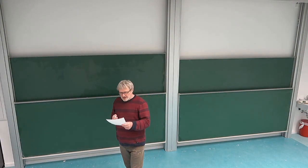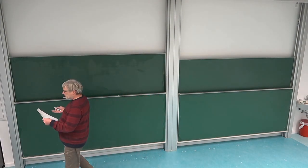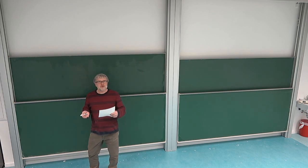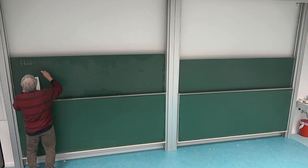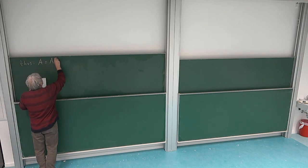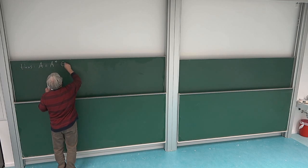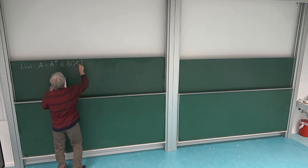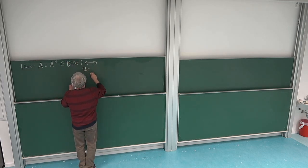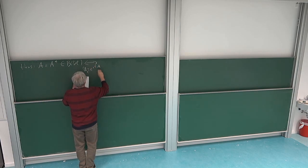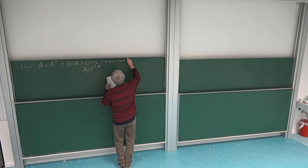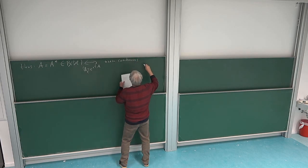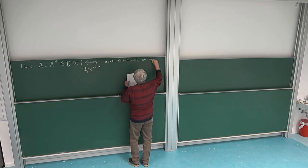What we have seen up to now is that norm-continuous groups correspond to bounded self-adjoint operators. That's the conclusion from the statements we proved: bounded self-adjoint operators correspond to going over to U(t), which is e to the itA, so they correspond to norm-continuous unitary groups.